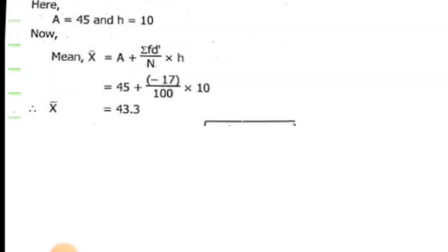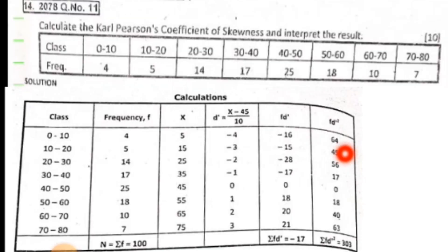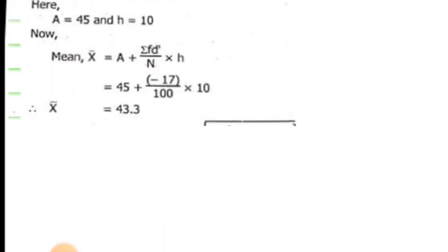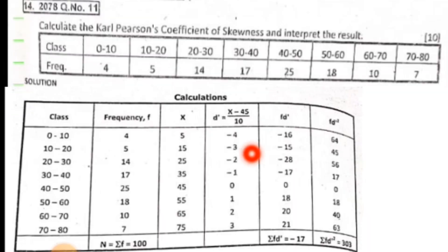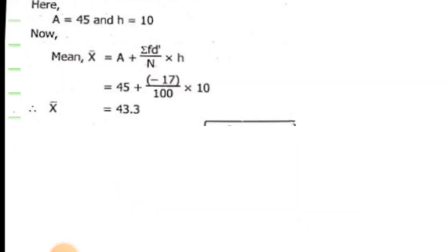We have standard deviation and mean. First the mean formula. Mean equals a plus summation fd' upon n times h. This is the step deviation method formula. Summation fd' is minus 17, n is 100, h is 10. Calculating, the mean is 43.3.